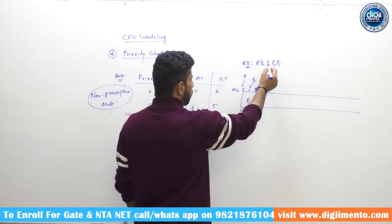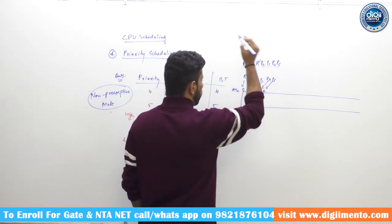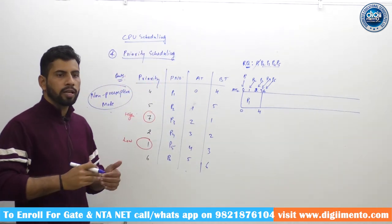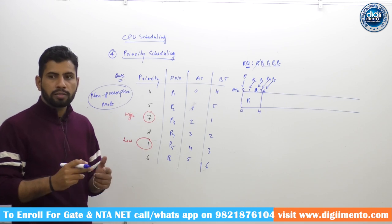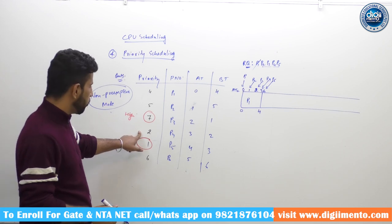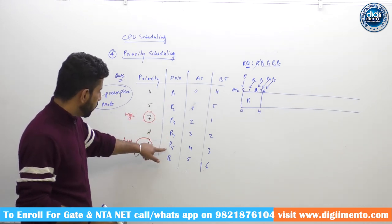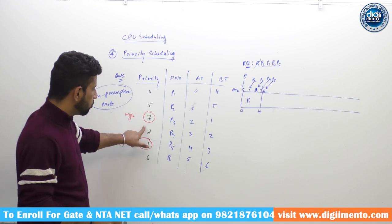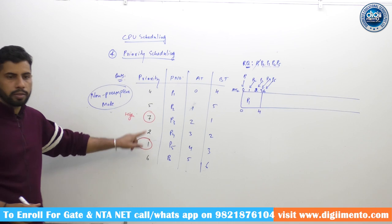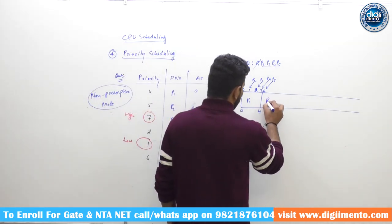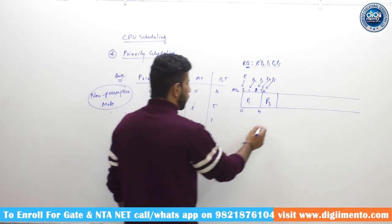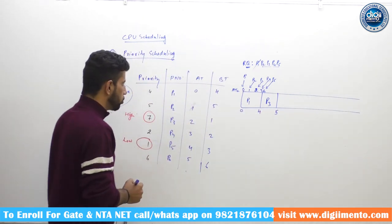P1 is completed. Now there are 4 processes in the ready queue: P2, P3, P4, P5. Check which has the highest priority — highest priority means highest integer number. Among these four processes, P3 has the highest priority (7). So we schedule P3 here. P3 executes for 1 unit of time and completes at time 5.